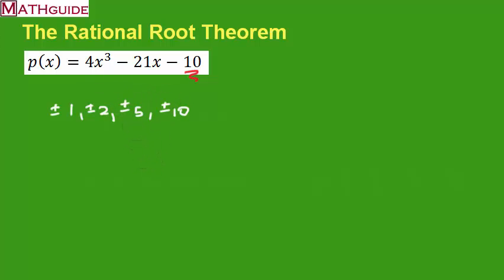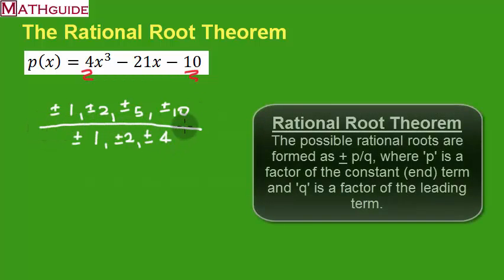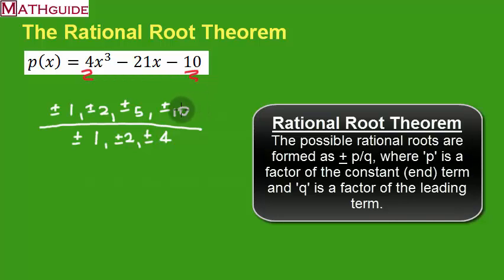Let's next talk about the leading term. So here's the leading term of 4. Let's write all the factors of 4: 1 goes into 4, 2 goes into 4, 4 goes into 4. And of course positives and negatives on all of those. Now what we do is form a big fraction, taking the end factors and dividing them by the leading coefficient factors. And that's how we're going to form all the possible rational roots.